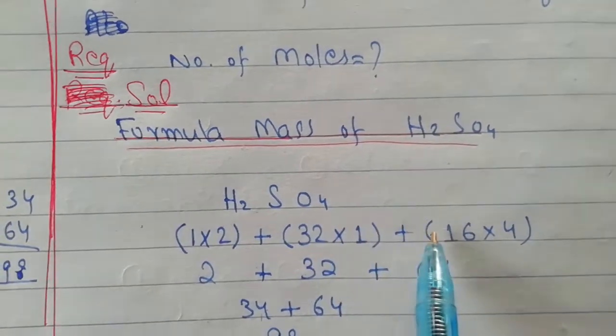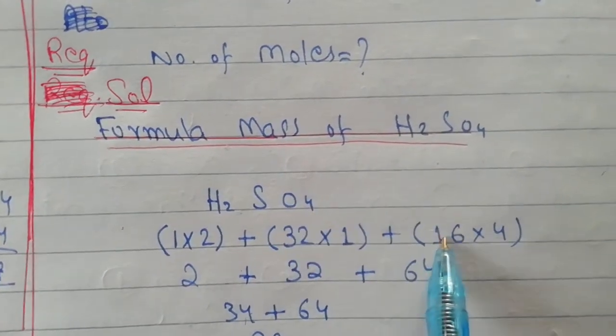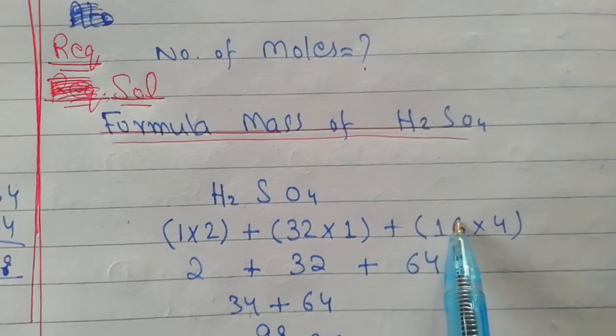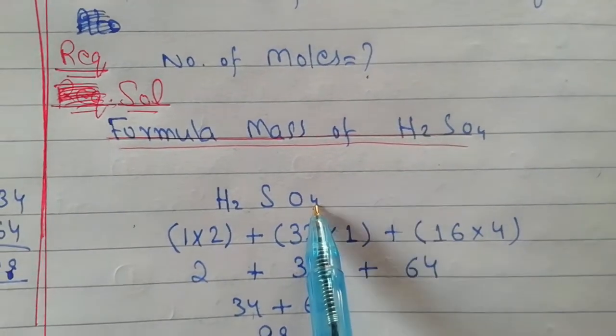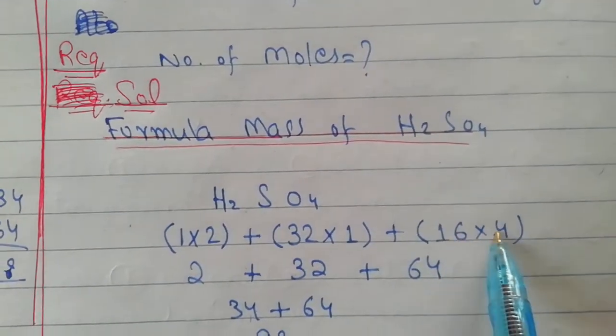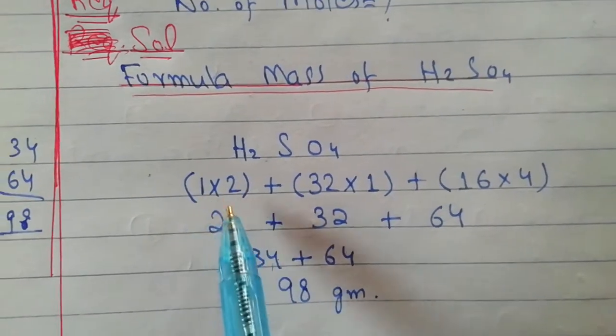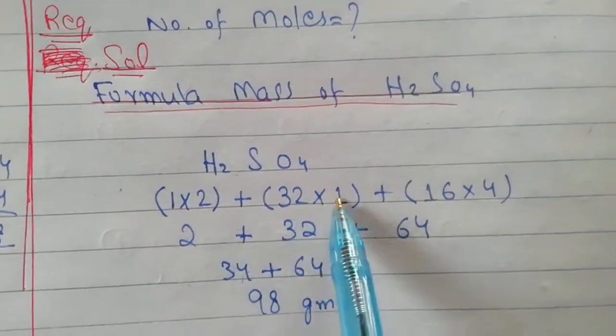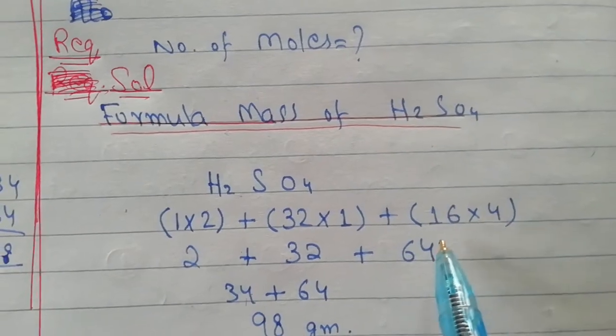Then plus function. Now we have oxygen, atomic mass is 16. This is from periodic table. Here it's 4, so 16 multiplied by 4. Now two ones are 2, plus 32, plus 16 into 4 is 64.